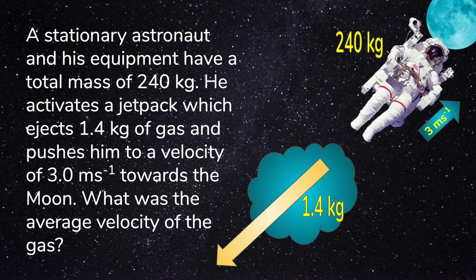The astronaut along with his kit has a mass of 240 kilograms and is pushed towards the moon with a velocity of 3 meters per second. The ejected gas has a mass of 1.4 kilograms.